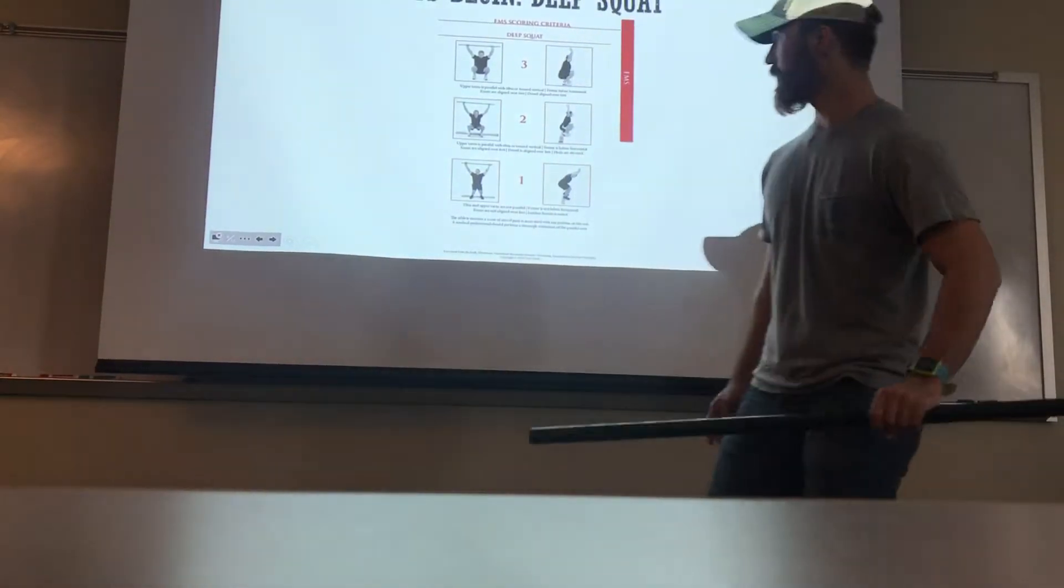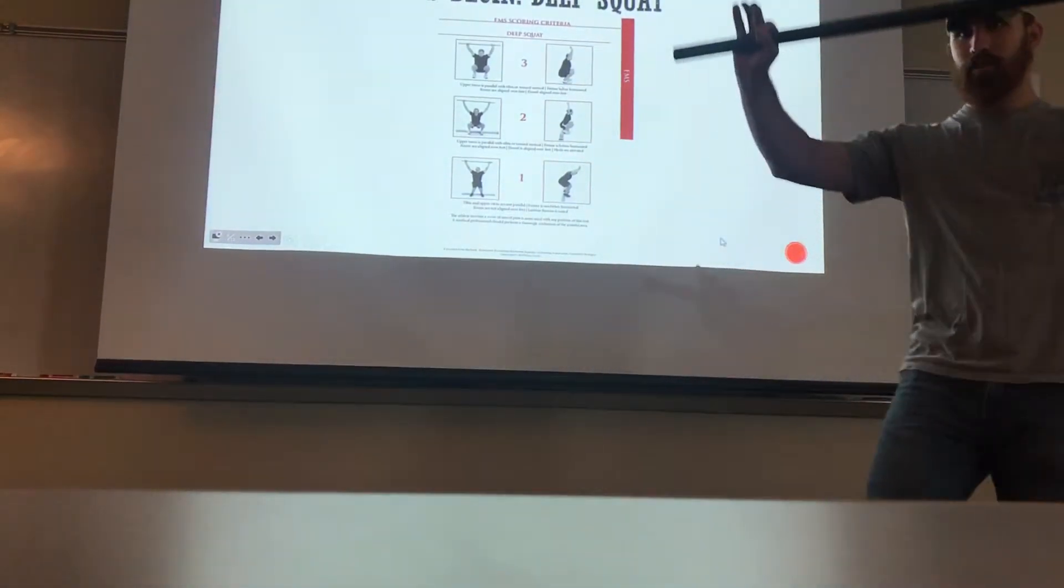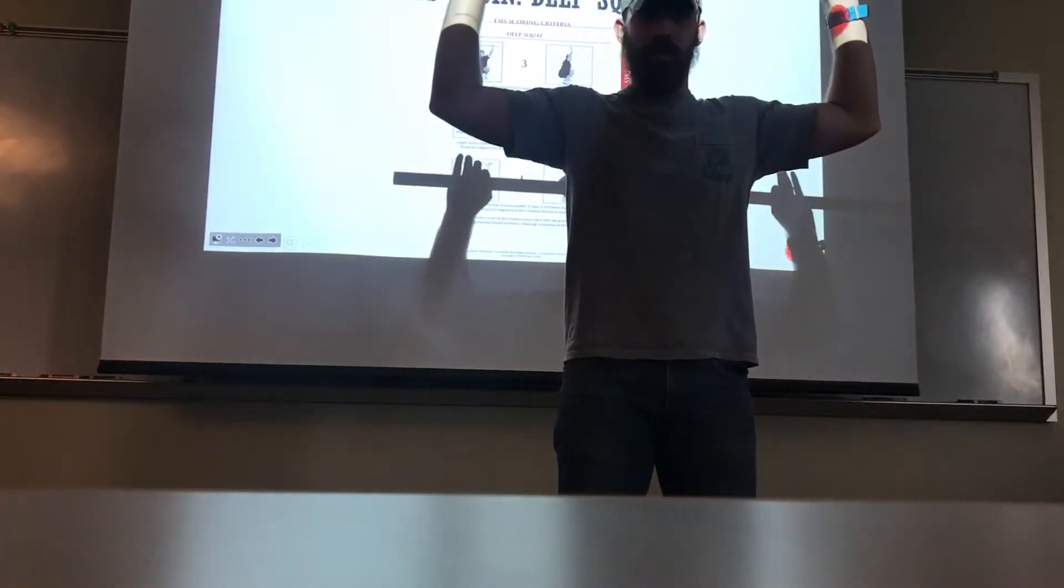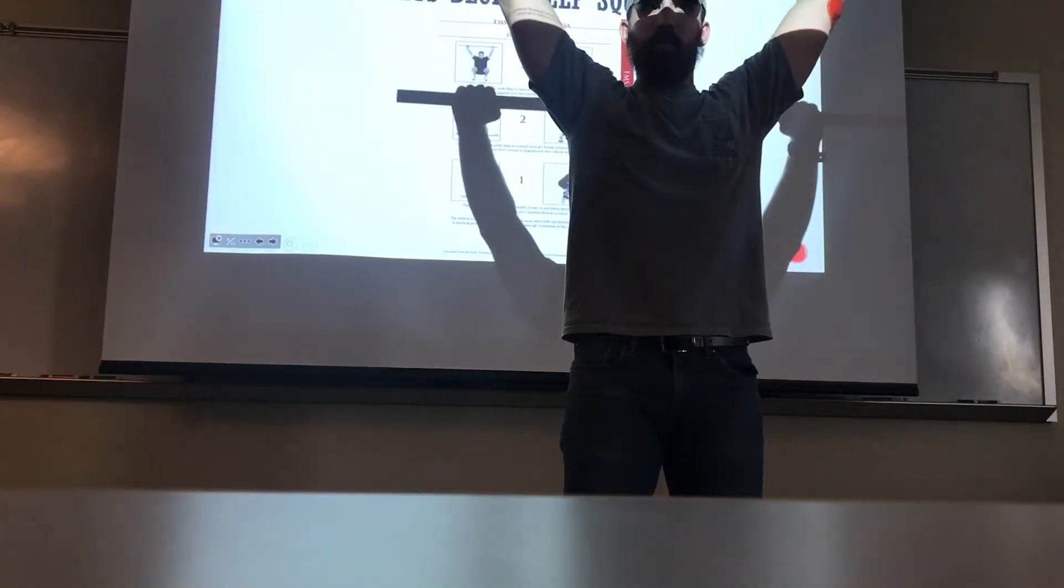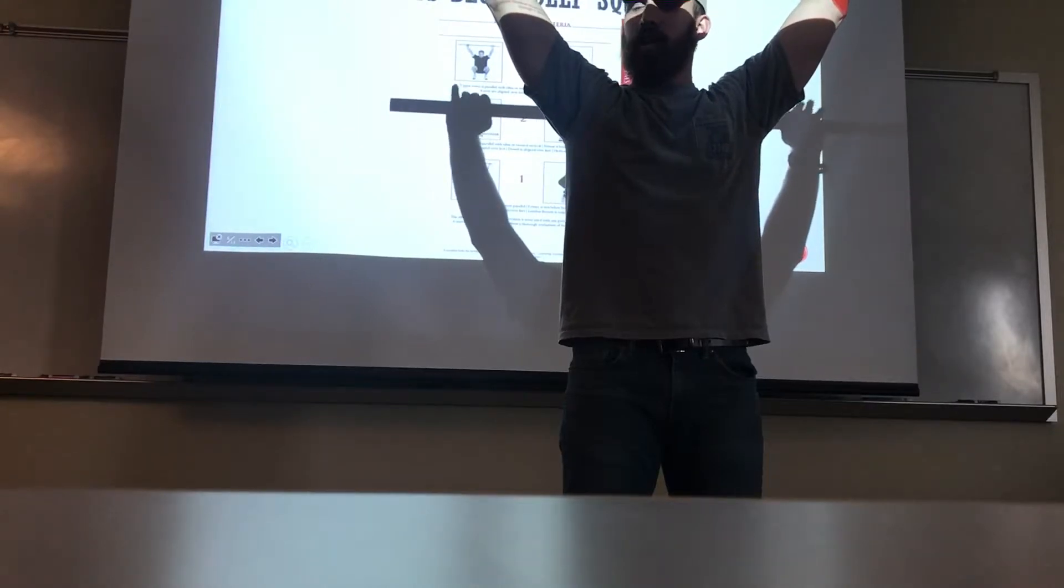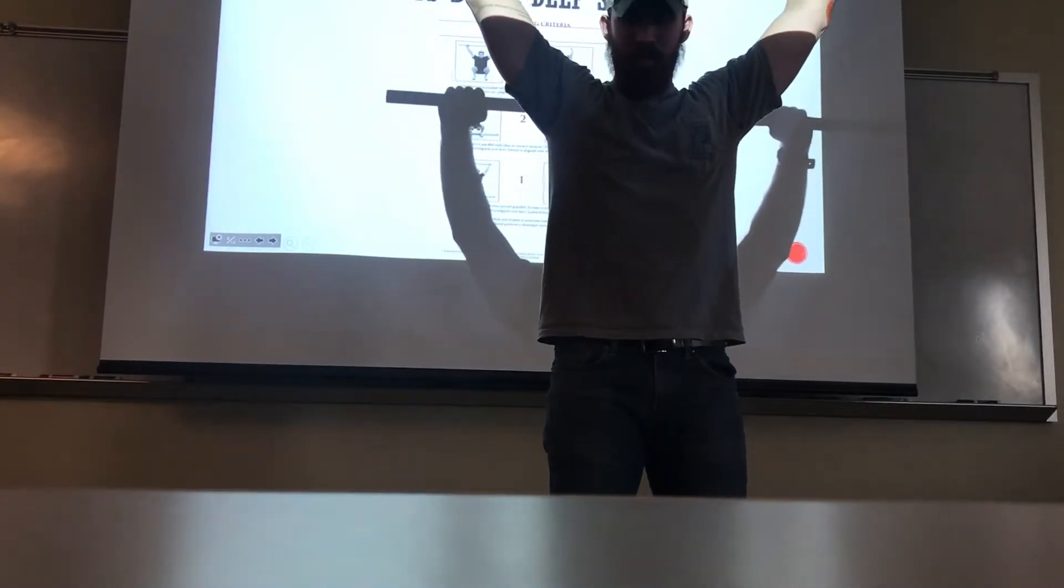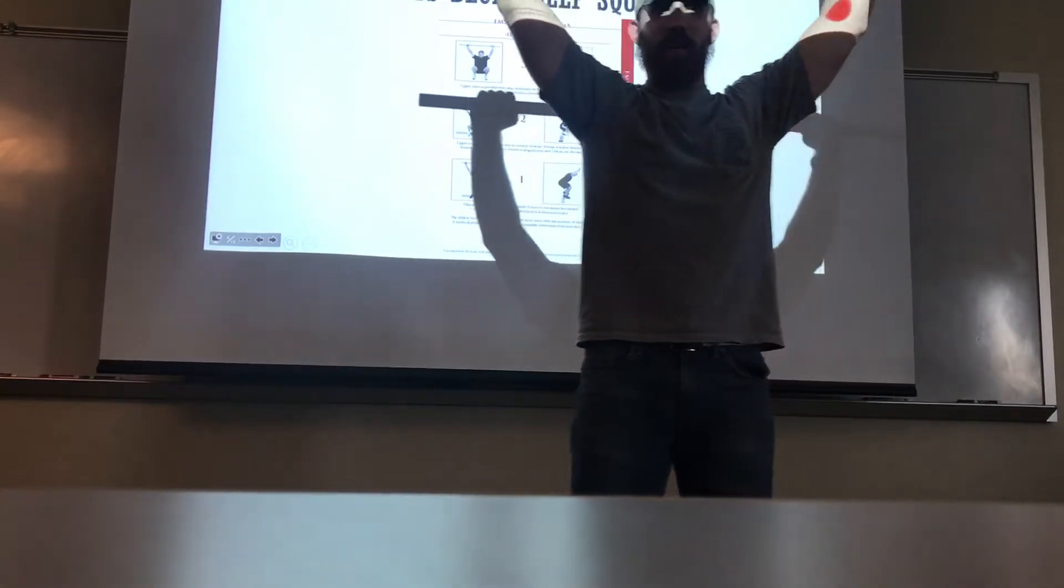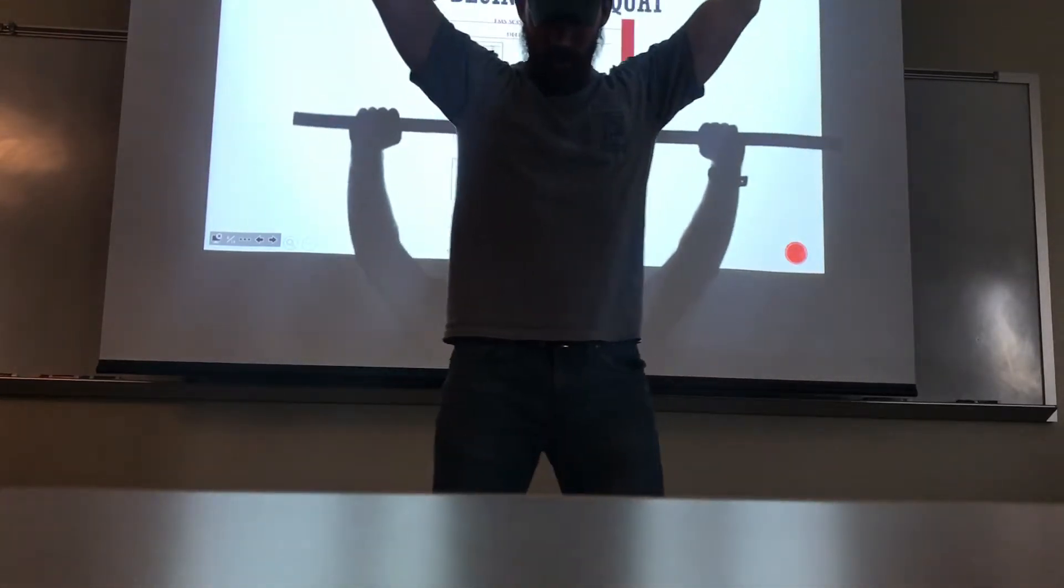So when you go to form the deep squat, you want to start it out with your arms roughly ninety degrees at the top of your head and you want to shoot straight up. You want to make sure your thumbs and your hands are perfectly wrapped around. And I'm not going to perform a three perfectly just so you guys know, because I do have my own compensations that I've made.